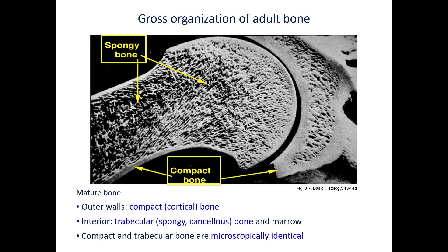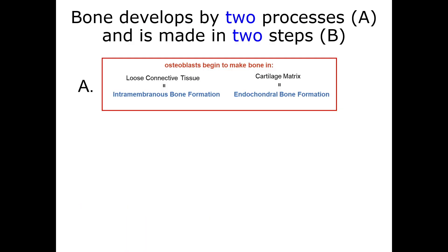Importantly, as we discussed in the first video, all adult bone has the same histological structure. Bone formation begins early in embryogenesis and develops by two processes. Osteoblasts can secrete osteoid directly into portions of the condensed mesenchymal connective tissue — this is called intramembranous ossification. Alternatively, cartilage models of bone are elaborated by chondroblasts in condensed mesenchyme, which is then replaced by bone — this is termed endochondral ossification.